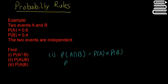Since we know it's independent, we can use this formula to find P of A intersect B. If they weren't independent, we couldn't do that. So it's just 0.6 times 0.4, which gives us an answer of 0.24.